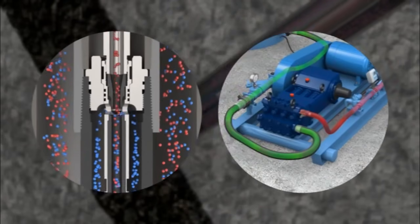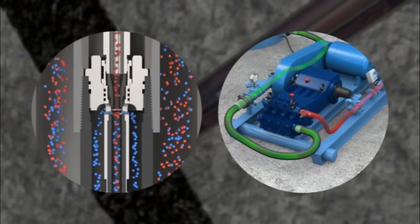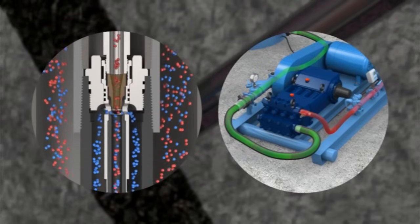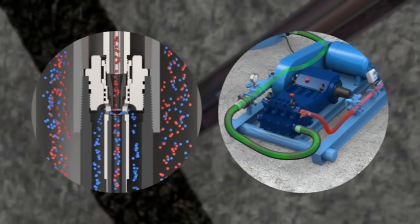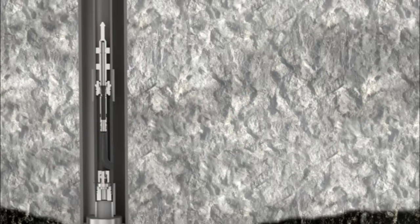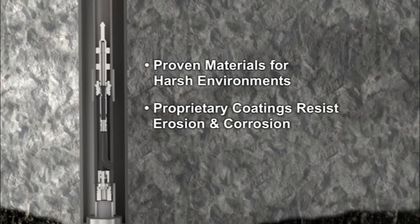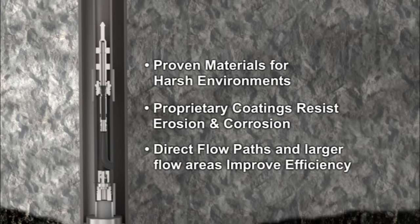The production rate is determined by adjusting the nozzle pressure through the throat and nozzle in combination with the reservoir energy at the pump. A wide range of production rate and lift capacity is possible. The JJ Tech jet pump is built with proven materials and proprietary coatings to improve reliability and resist erosion and corrosion. Direct flow paths and larger flow areas improve efficiency over other designs.